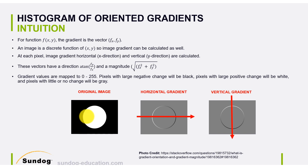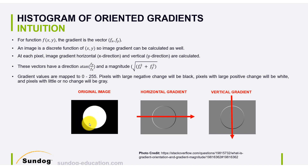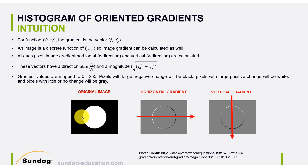We want to calculate the gradient in the x direction, called the horizontal gradient. We scan from left to right — all the black pixels give us zero, and then suddenly we see white pixels at 255. Going from zero to one means there is a big difference in magnitude, going from a very small value to a very large value, so there is a positive gradient, indicated in the gradient image by white color.